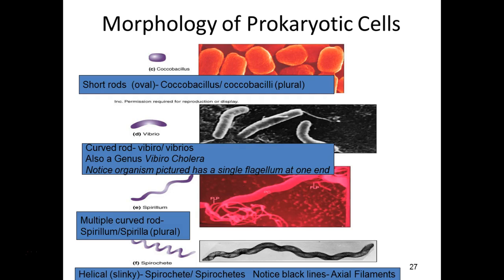Pathogenic spirochetes include Borrelia burgdorferi, the causative agent of Lyme disease. The causative agent of syphilis is also a spirochete — Treponema is the genus name. In Louisiana's swamps, the kissing bug transmits Chagas disease, caused by the protozoan Trypanosoma — dogs in Louisiana swamps are getting this disease, which is usually more common in South America.